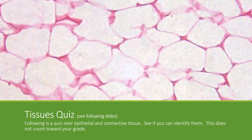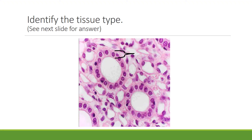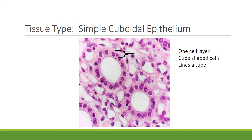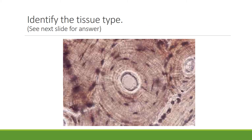Now see how well you know the first two types of tissues — epithelial and connective. The following slides contain a quiz. Can you identify this tissue? This is simple cuboidal epithelium: one cell layer, cube-shaped cells, and it lines a tube or covers an organ.